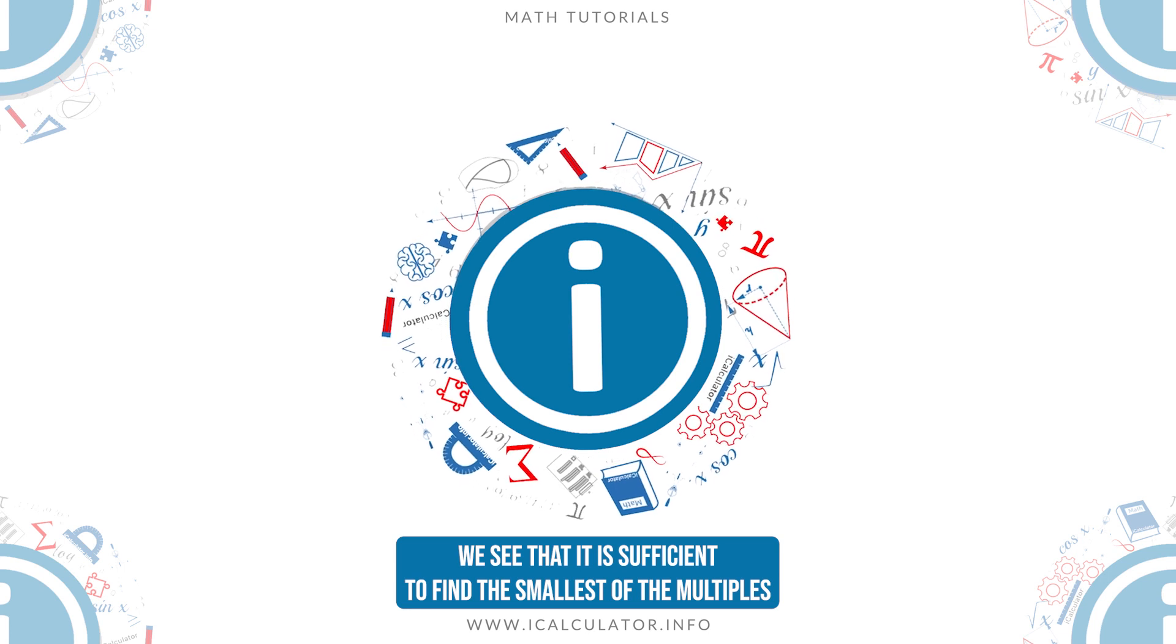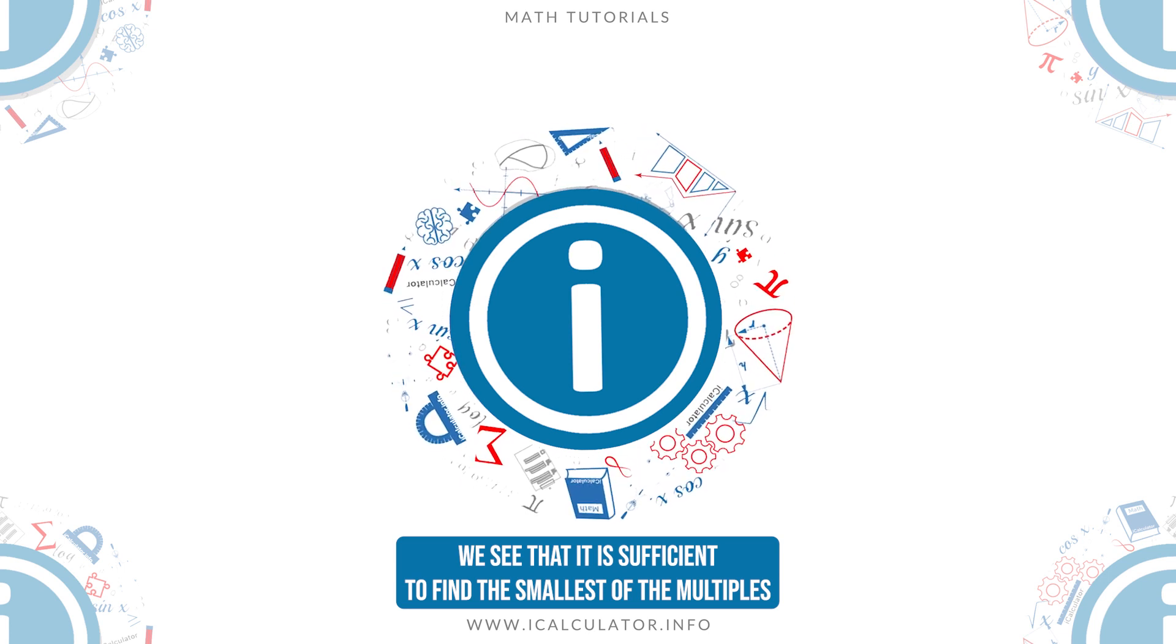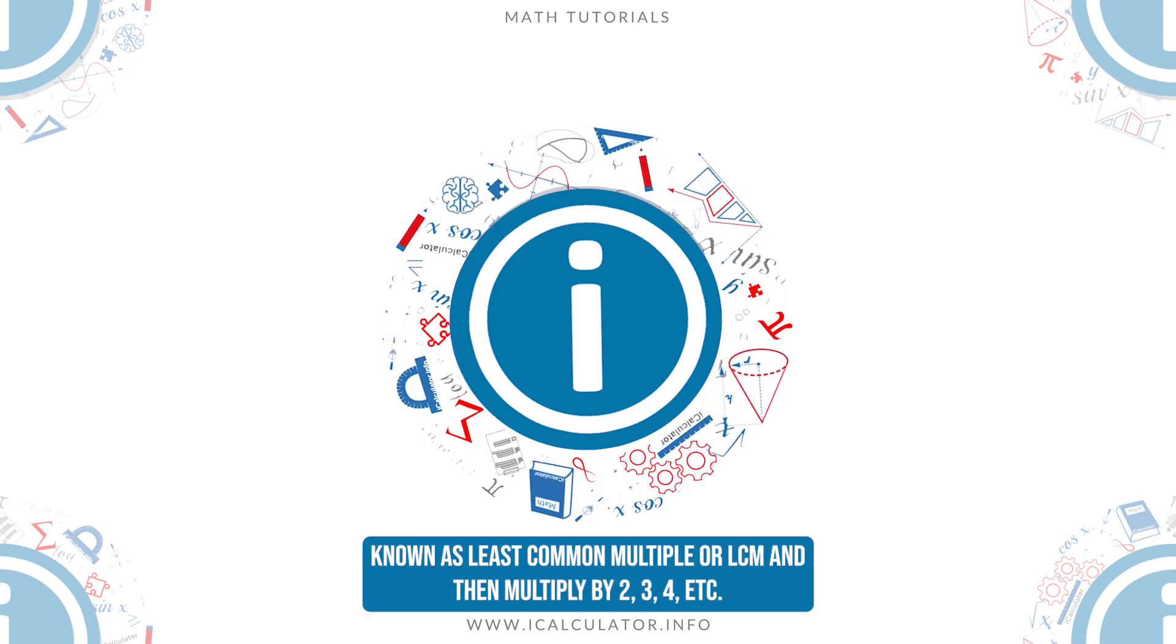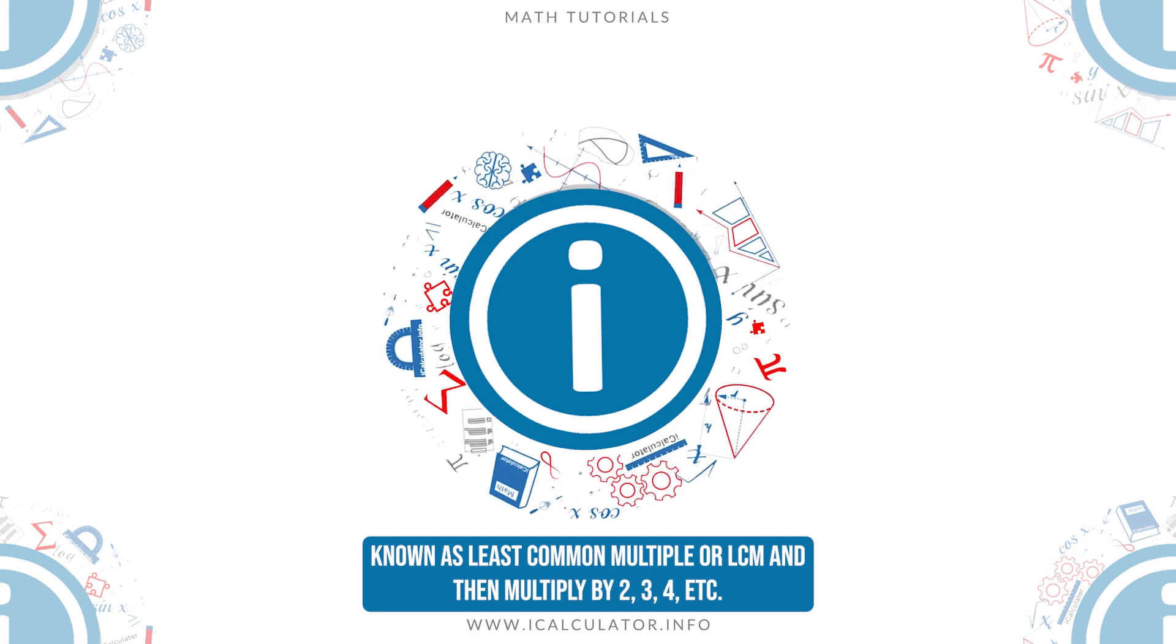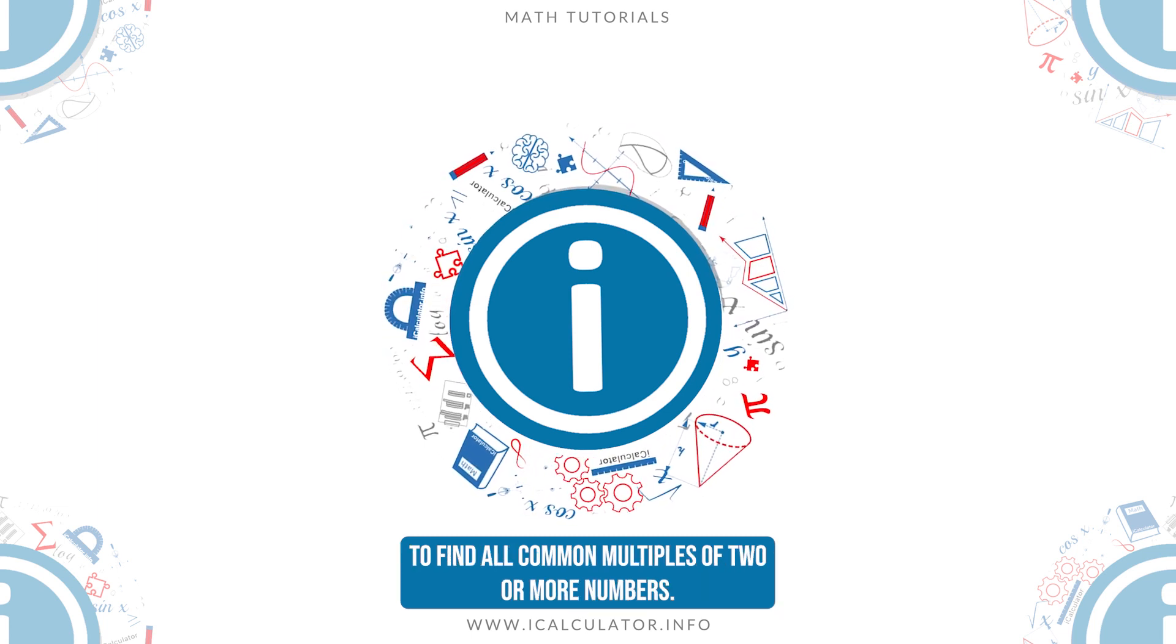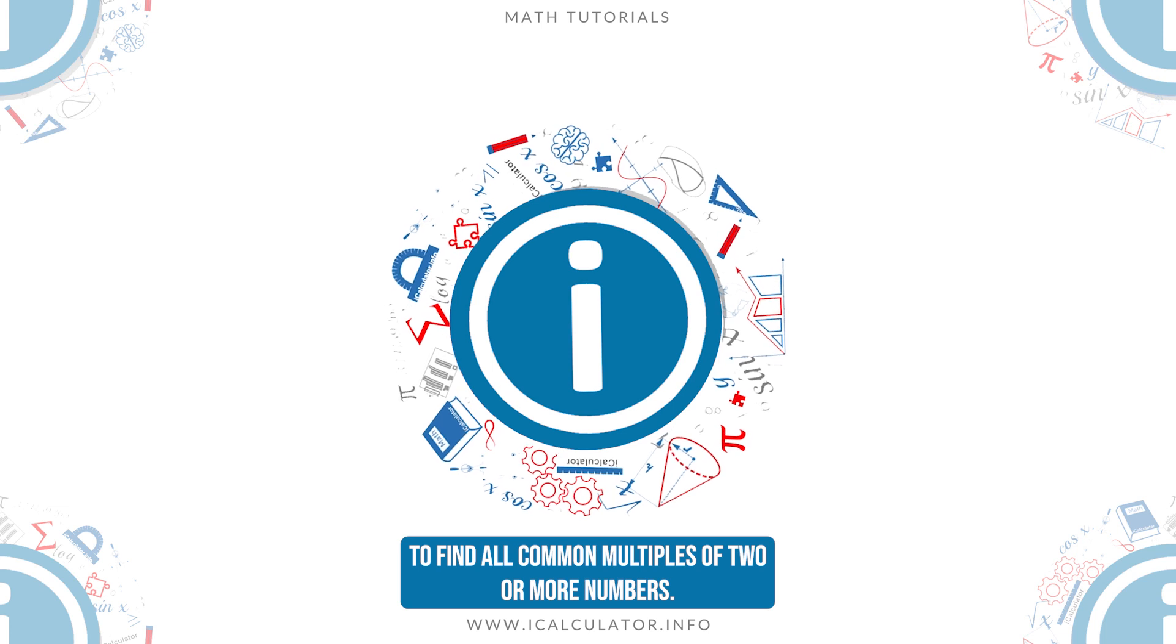We see that it is sufficient to find the smallest of the multiples, known as Least Common Multiple or LCM, and then multiply it by 2, 3, 4, etc. to find all common multiples of two or more numbers.